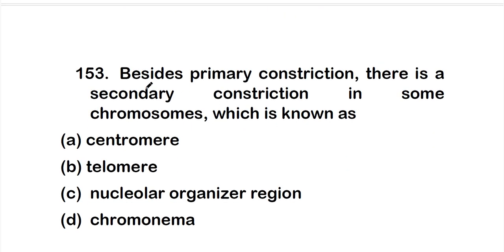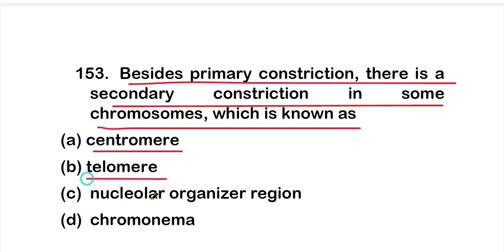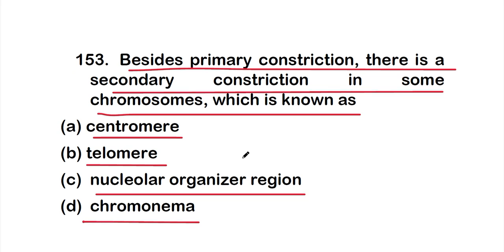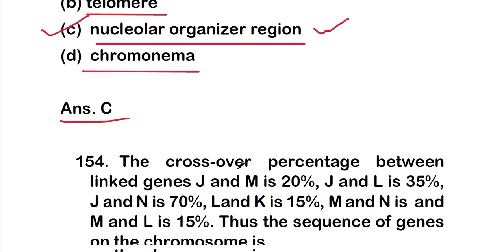Question 153: Besides the primary constriction, there is a secondary constriction in some chromosomes, which is known as — option A: centromere; option B: telomere; option C: nucleolar organizer region; option D: chromonema. The correct answer is option C — the secondary constriction is known as the nucleolar organizer region (NOR).